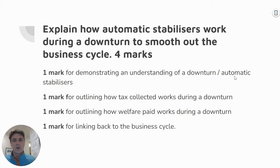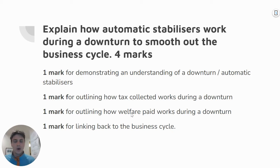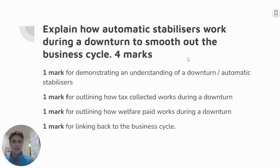You also want to quickly demonstrate what automatic stabilizers are, as opposed to structural and discretionary stabilizers. The next mark is for outlining how taxes collected work. Note that the question says automatic stabilizers plural — there are two stabilizers you should discuss: taxes collected and welfare paid. You could mention a couple of different taxes, but the simplest is income tax. Outline how they both work during a downturn, then link it back to the business cycle. This is an explain question, so demonstrate the cause — automatic stabilizers — and the effect on the business cycle.